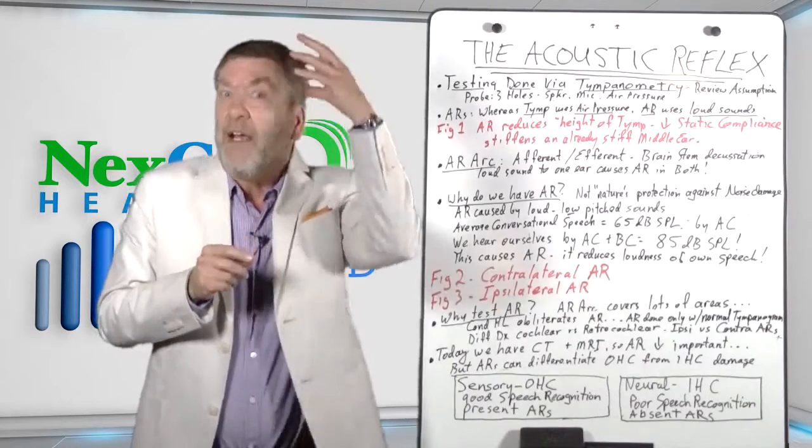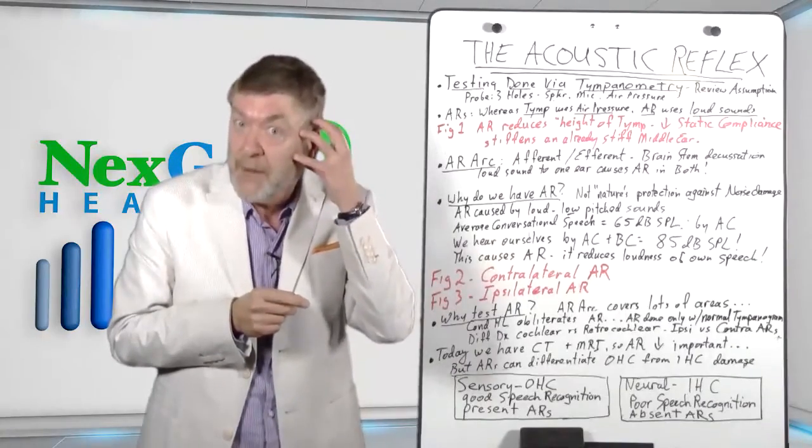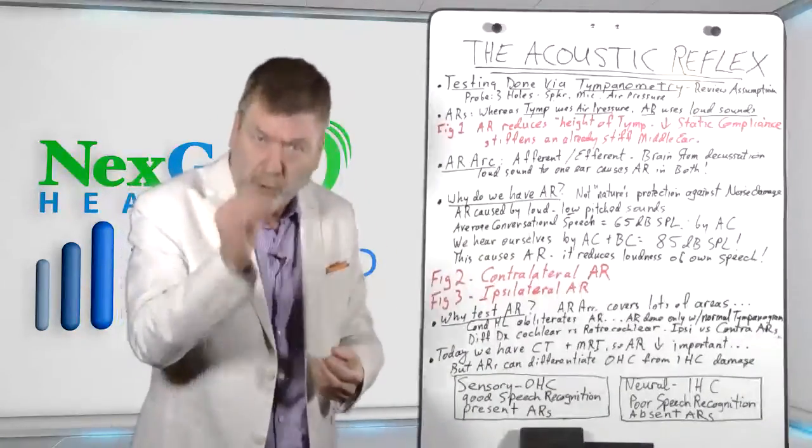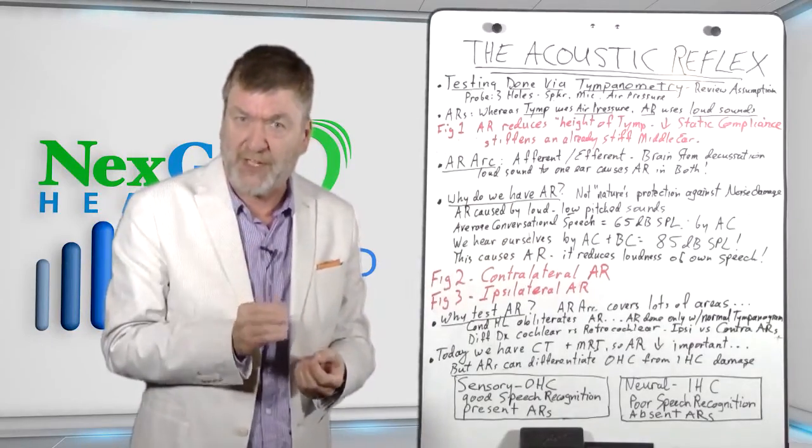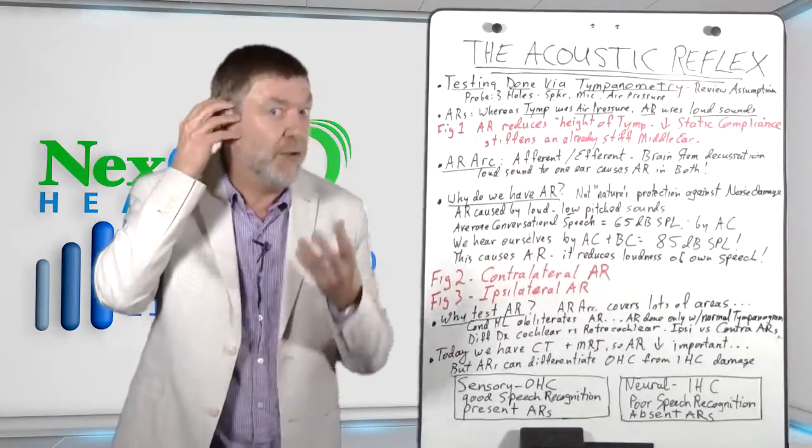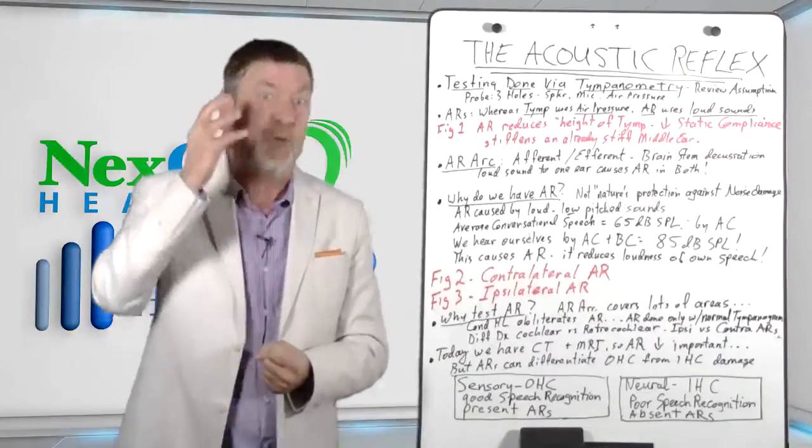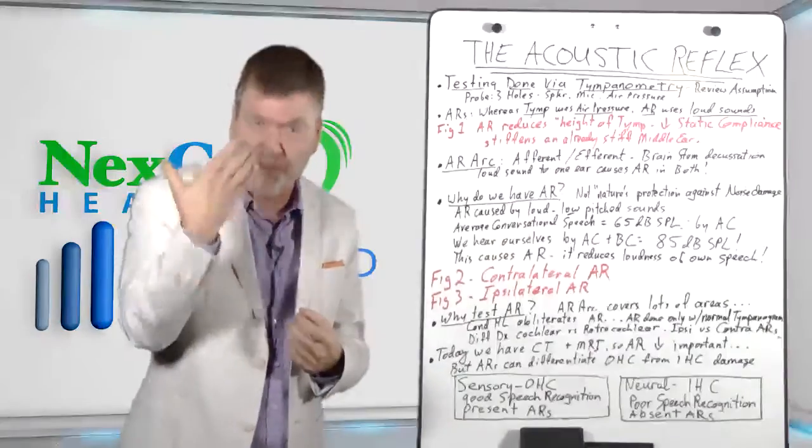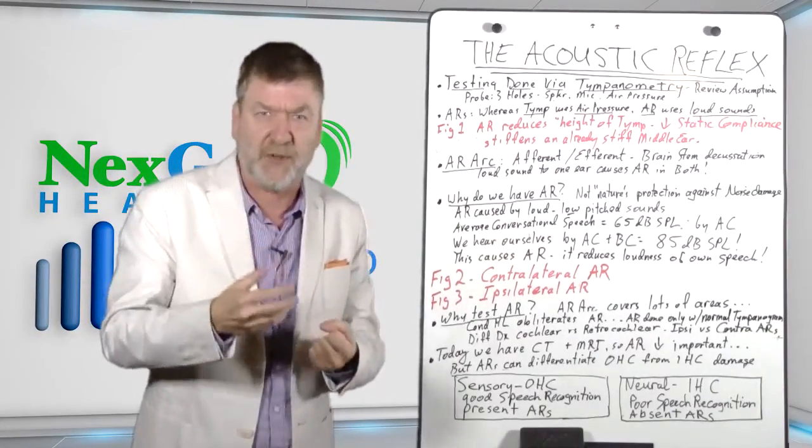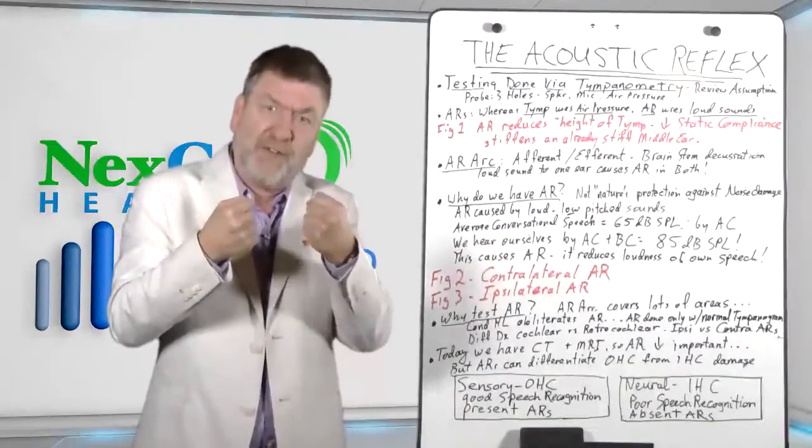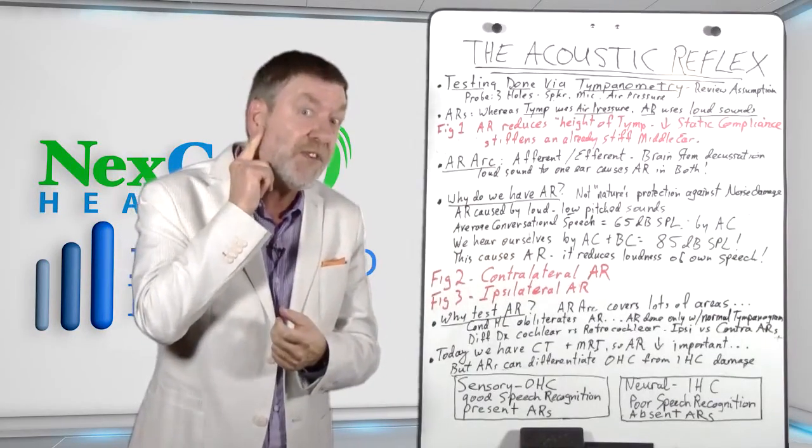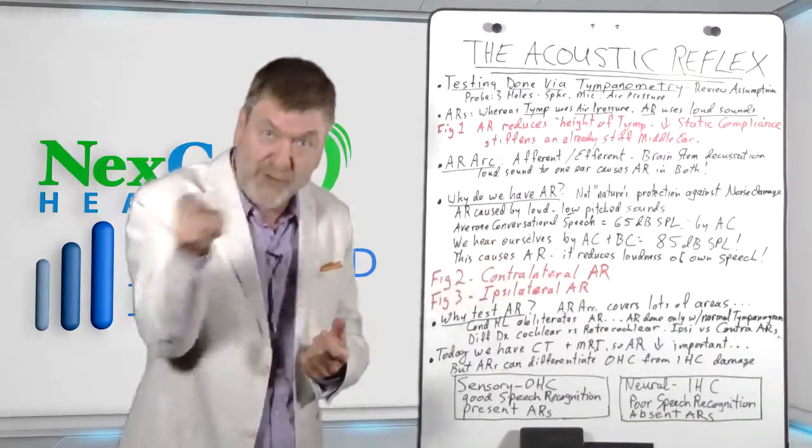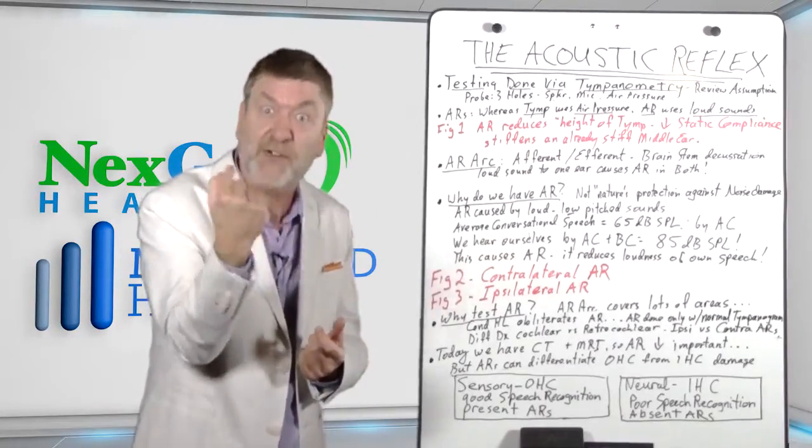Its microphone picking up the reflected sound off the eardrum. Meanwhile, a headphone is put on the opposite ear. Suddenly, out of that headphone is emitted a loud, low-pitched tone for a few seconds. Beep! And what does that do? Causes an acoustic reflex, which tightens the tensor tympani muscle and the stapedius. By the way, the stapedius muscle is much stronger of a pull than the tensor tympani. But anyway, the acoustic reflex occurs in the middle ear system.